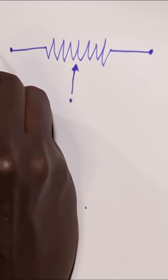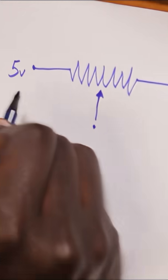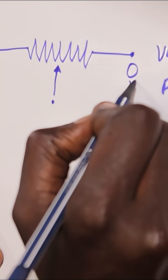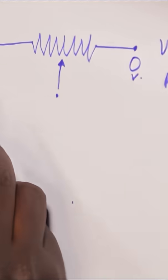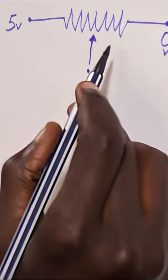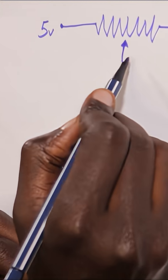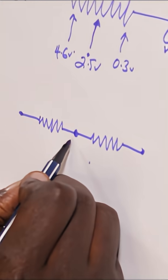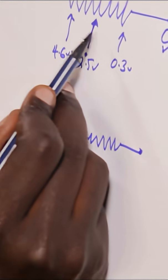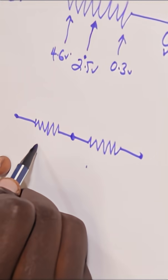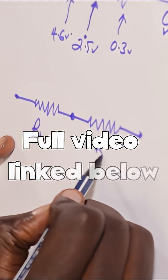If you have five volts coming out of here and zero volts coming out of here, then at any given point, depending on how this thing is rotating, you'll be able to get a variable voltage coming out of here. What's happening is that you have basically created two resistors in series. At any specific point on this line, you have resistance value one and resistance value two.